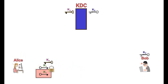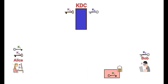Alice decrypts the message and gets the session key and sends the other part of the message to Bob. Bob decrypts the message with his key and gets the session key as well.